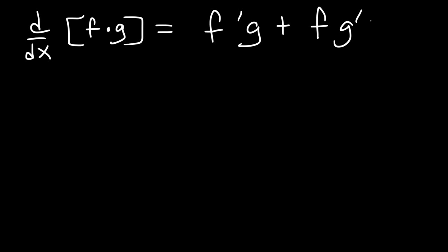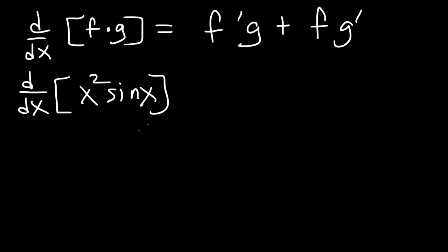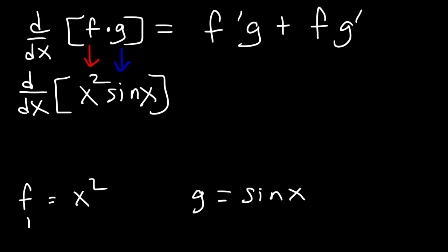Let me give an example. Let's say if we want to find the derivative of x squared sine x. Notice that f is basically x squared and g is sine x. So let's write f is equal to x squared and g is equal to sine x. The derivative of x squared is 2x and the derivative of sine x is cosine x.